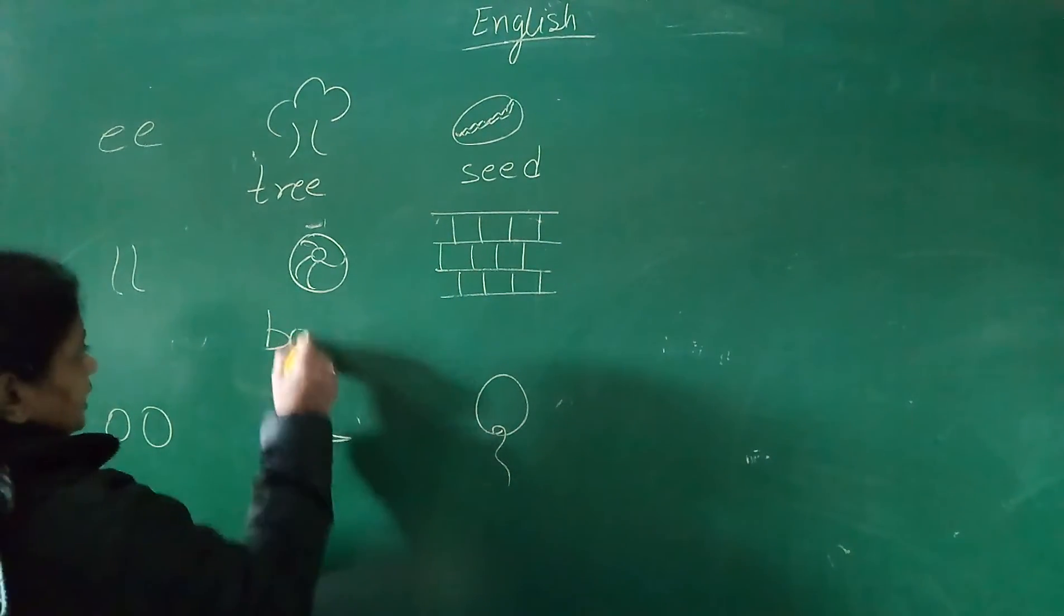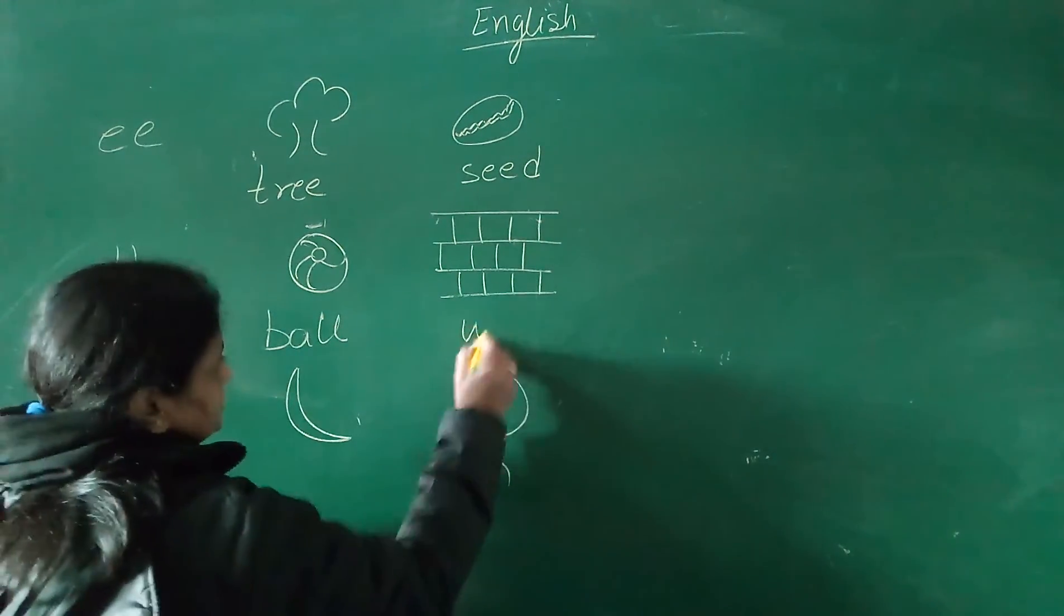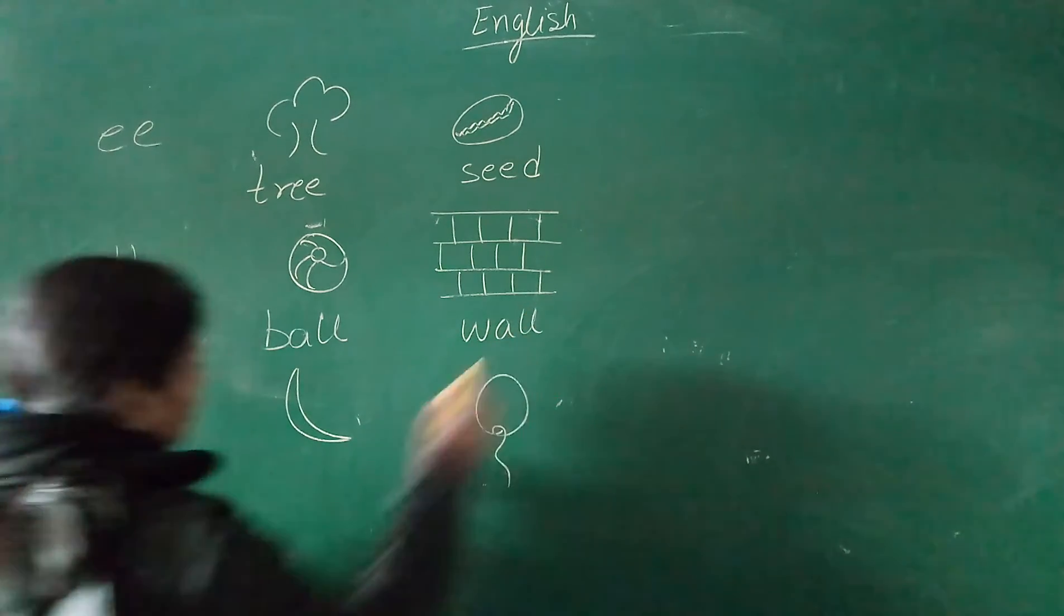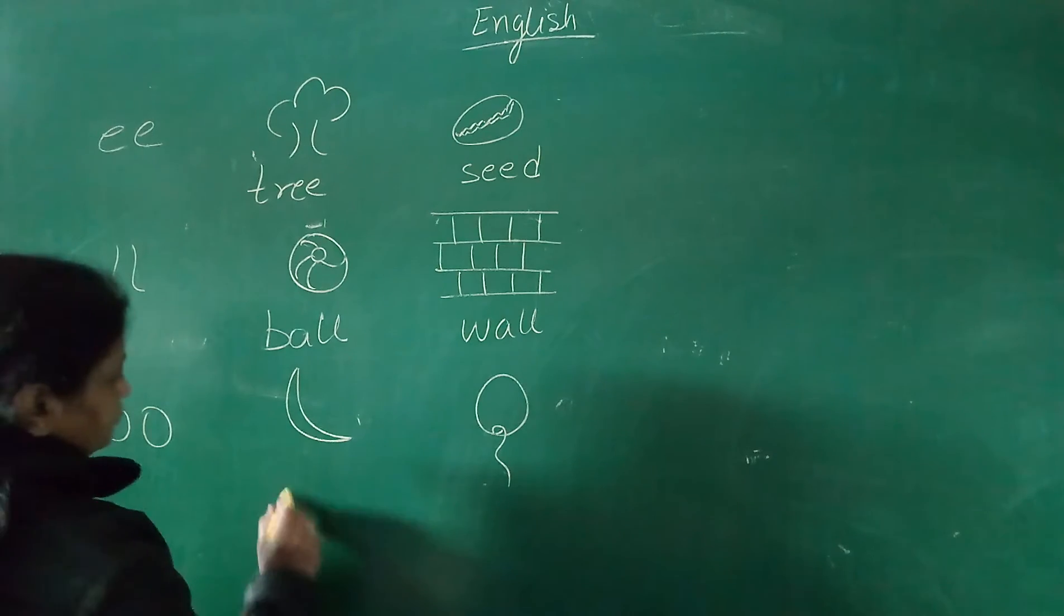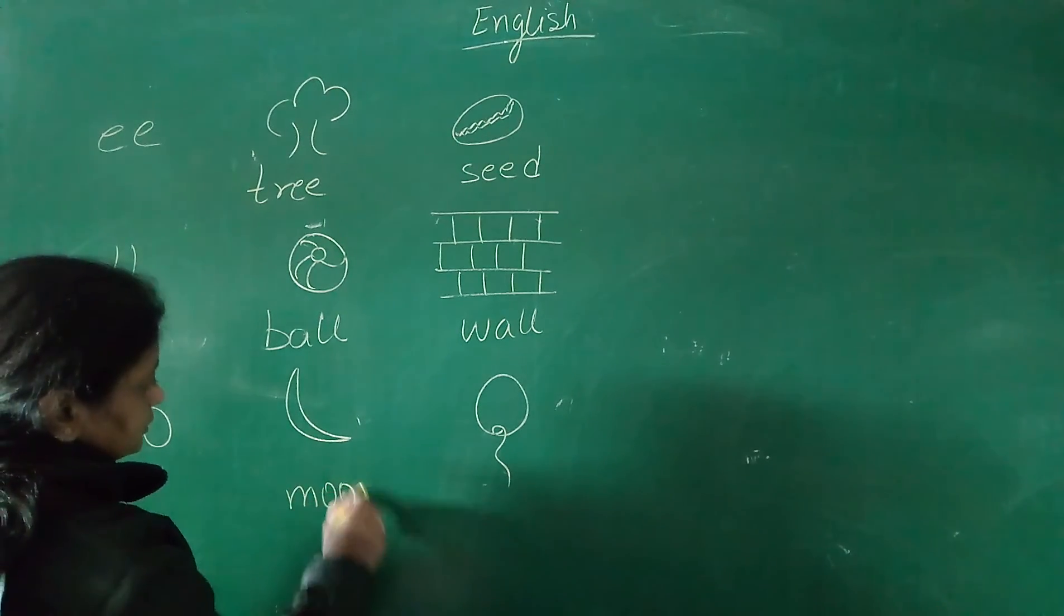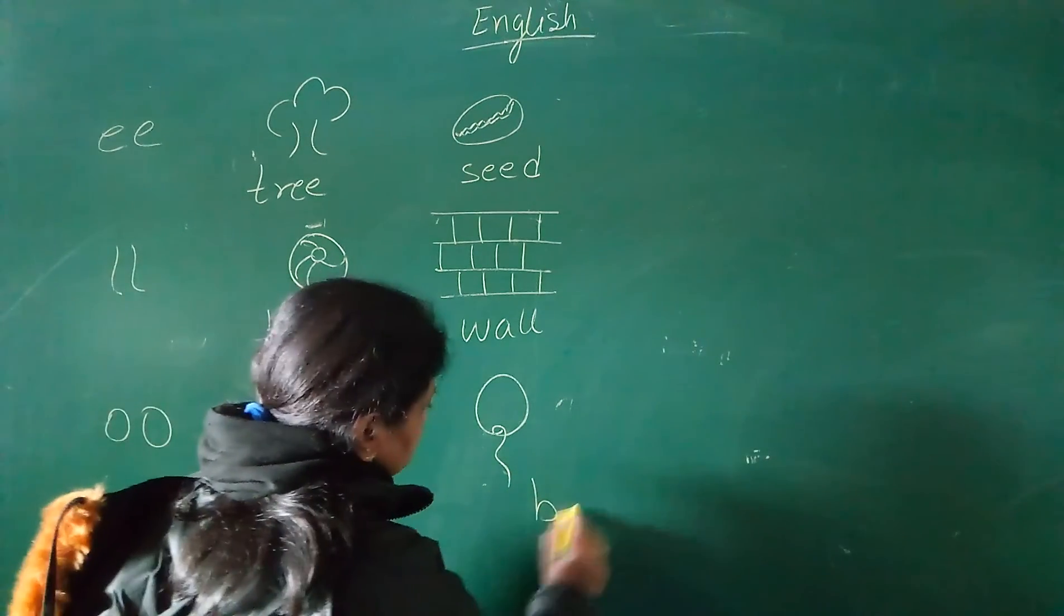And this is W-A-double L, wall. Double O letter pictures: this is moon, and this is balloon.